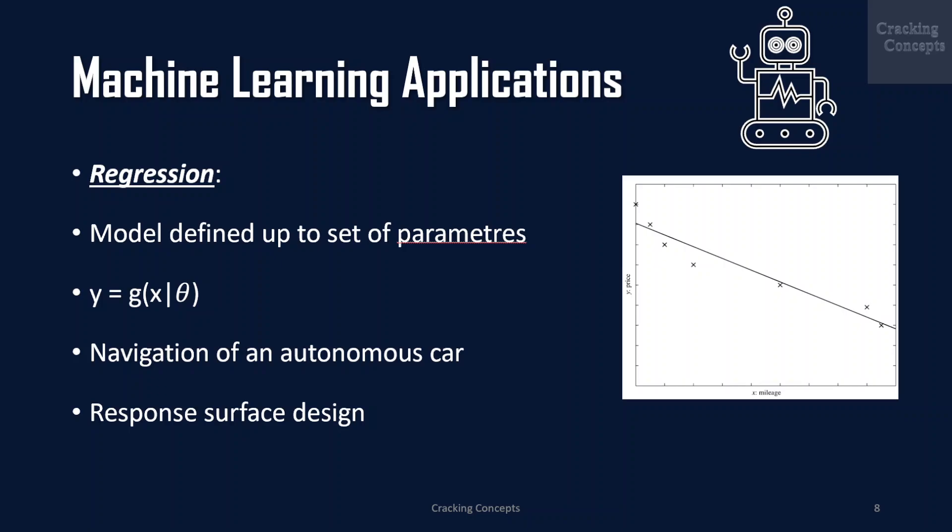Now we look into regression. Let us say we want a system that can predict the price of a used car. Inputs are the car attributes like brand, year, engine capacity, mileage, and other information that we believe affect the car's worth. The output is the price of the car. Such problems where the output is a number are called regression problems.